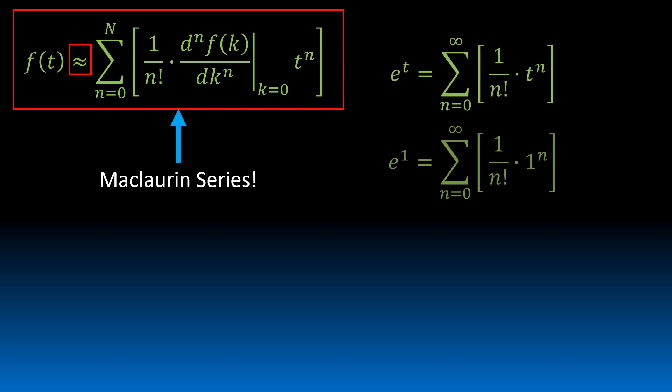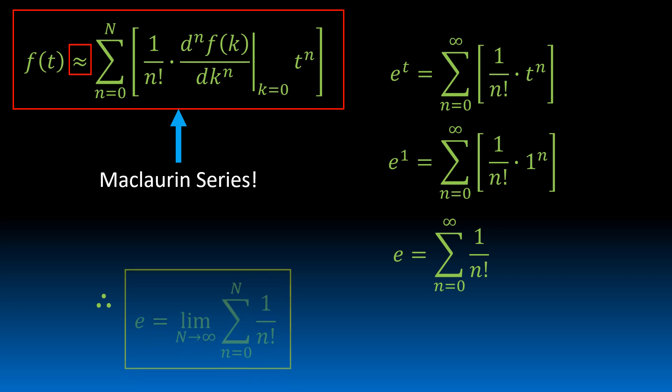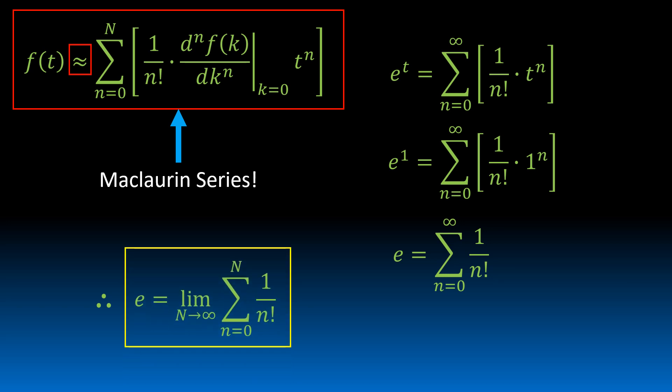If we substitute 1 in for t, then we get our e. And e is going to be equal to the limit as big N approaches infinity of the sum from little n equals 0 to big N of 1 over little n factorial.